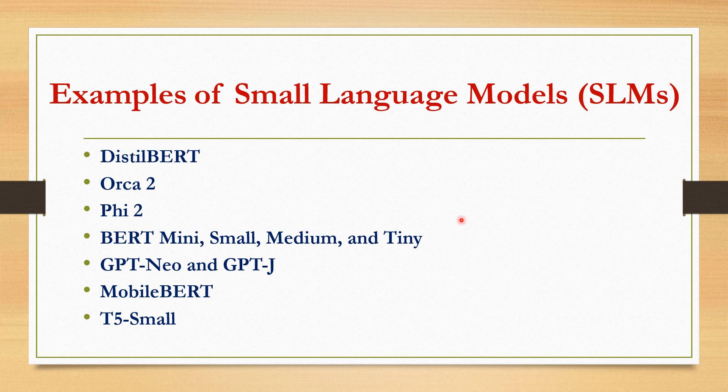What are some examples of small language models? First is DistilBERT, which is a more compact, agile, and lightweight iteration of BERT, a pioneering model in NLP. Next is Orca 2, developed by Microsoft — it results from fine-tuning Meta's LLaMA 2 using high-quality synthetic data. This innovative approach enables Microsoft to achieve performance levels that rival or surpass those of large language models, especially in zero-shot reasoning tasks.